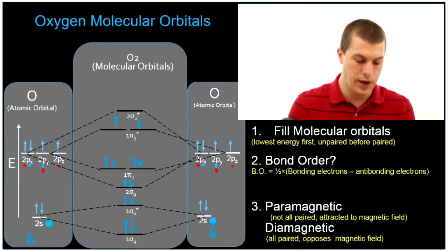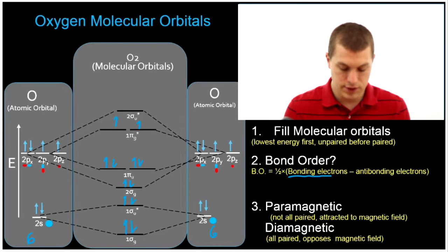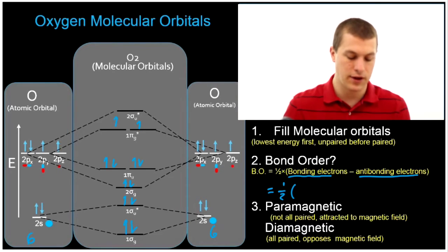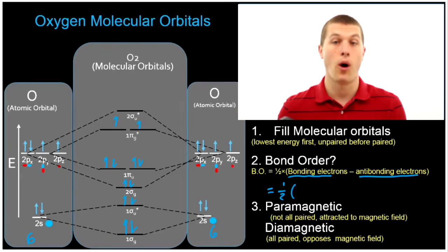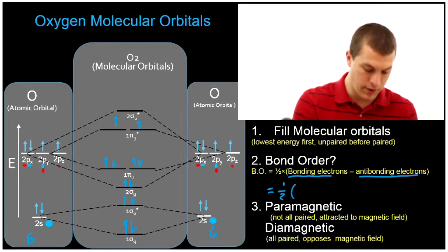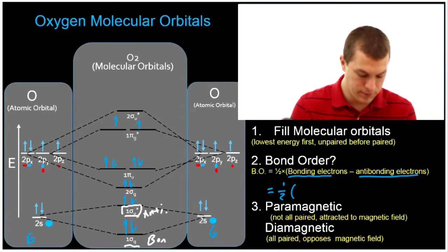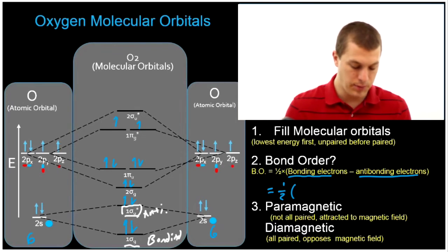We've filled up our molecular orbitals with our electrons. Now we can calculate the bond order. The way we calculate bond order is taking the number of bonding electrons and subtracting the antibonding electrons: one half times (bonding electrons minus antibonding electrons). Bonding electrons are in a bonding orbital, which won't have a little asterisk by it. The asterisk always means an antibonding orbital, and it's always going to be the higher energy of any orbital pair. So here we have 1 sigma g and 1 sigma u star — those with asterisks are antibonding, and those without are bonding.